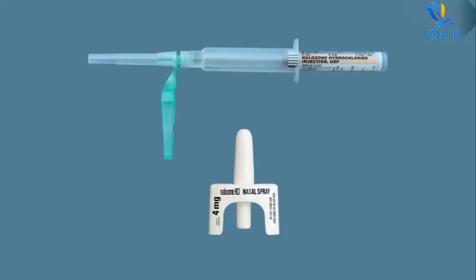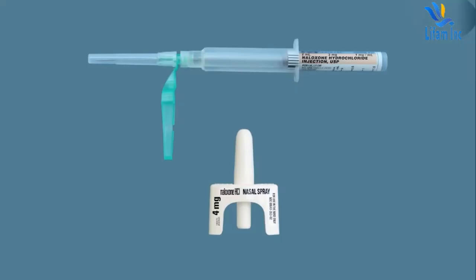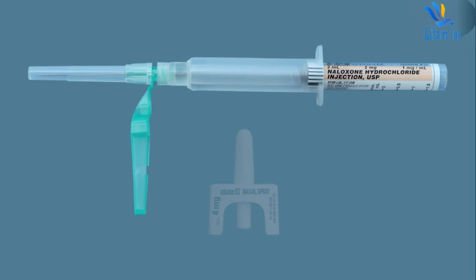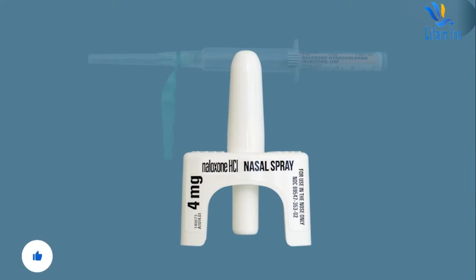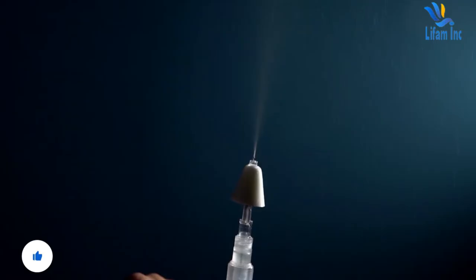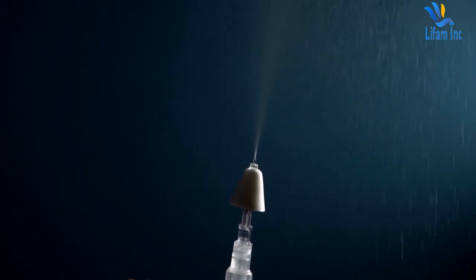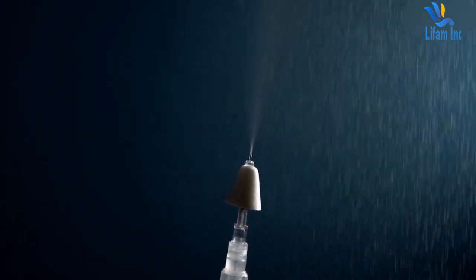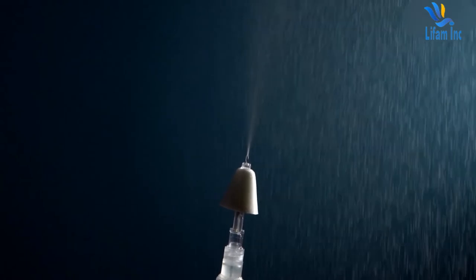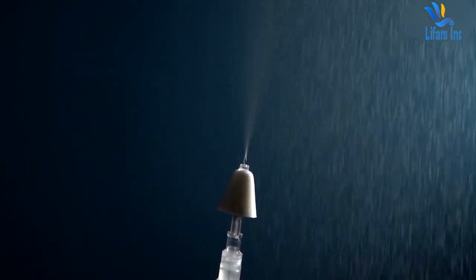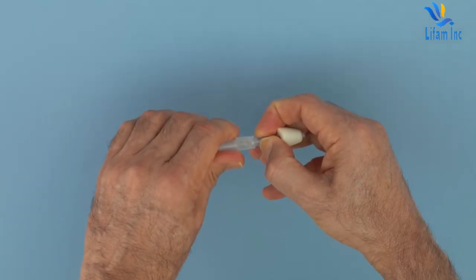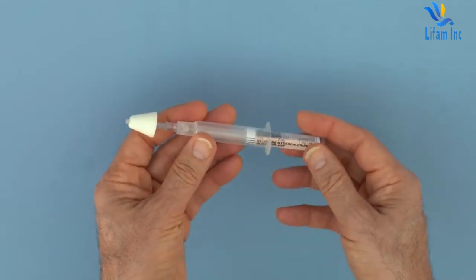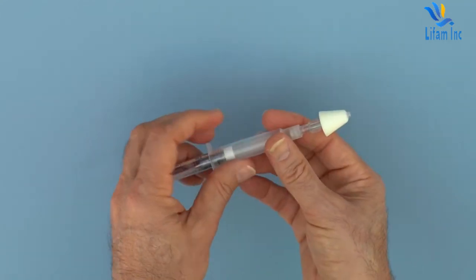Naloxone is available in two different formulations for clinical use: an injectable formulation intended for intravenous, intramuscular, or subcutaneous administration, and a concentrated formulation intended for intranasal administration. Intranasal administration of the injectable formulation has been reported, but this approach has not been approved by the FDA. It is less effective than injection and requires time-consuming assembly of an atomization device.